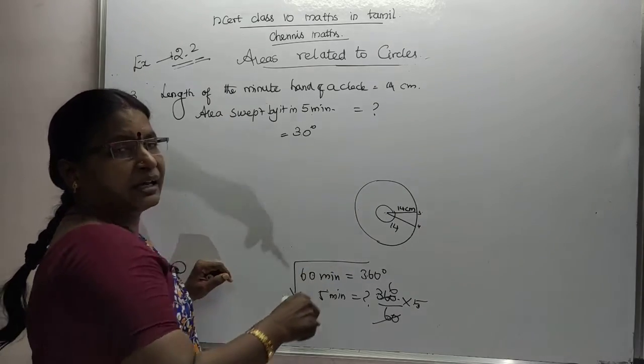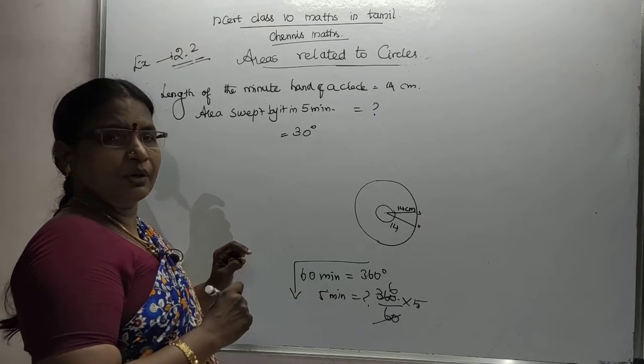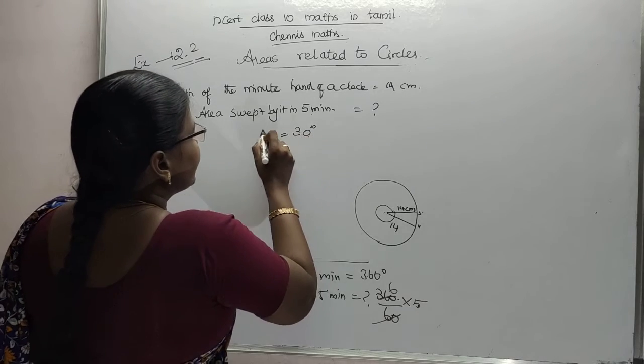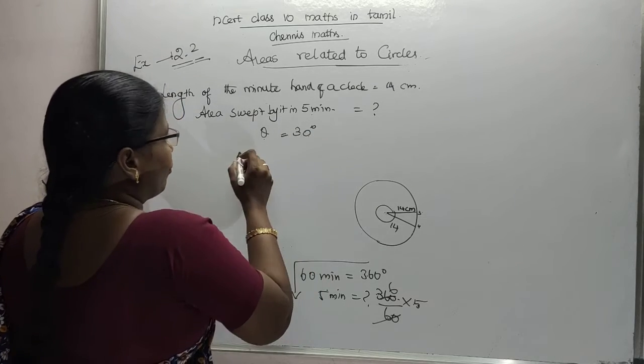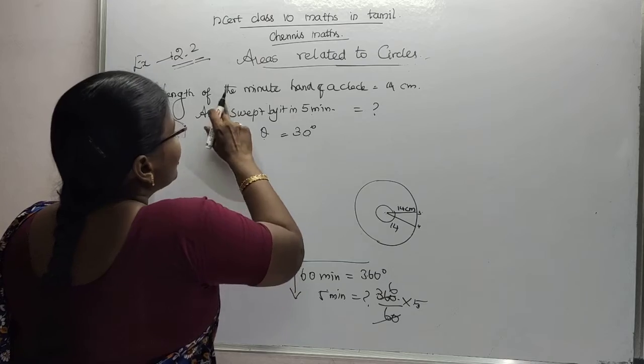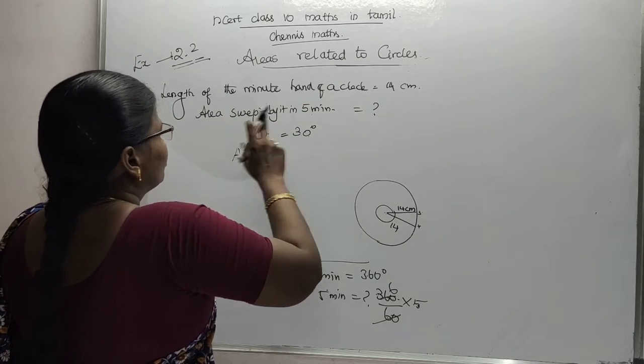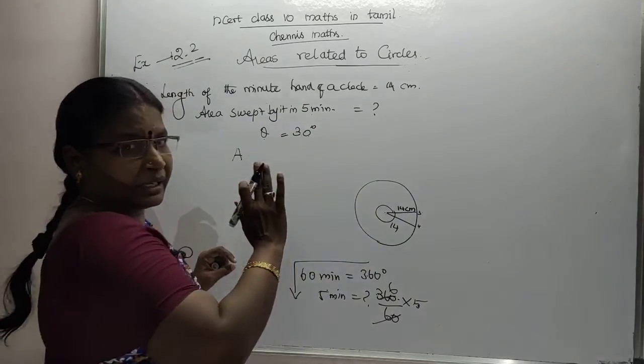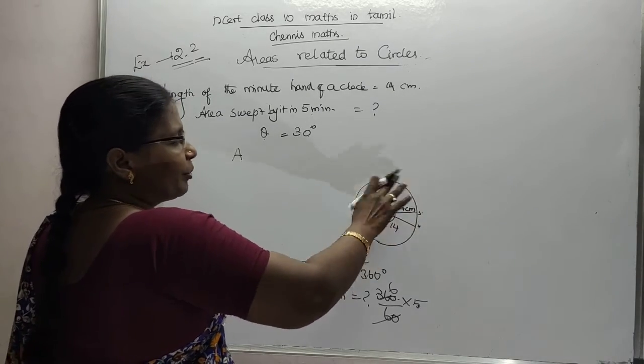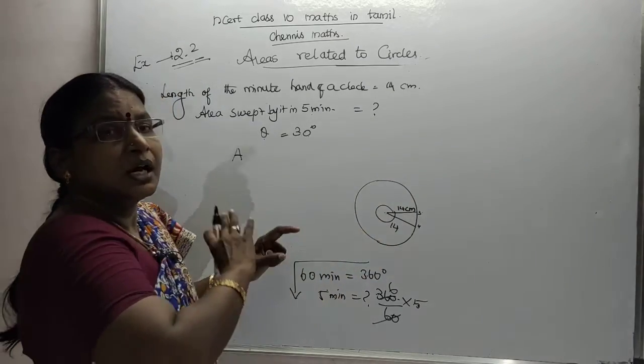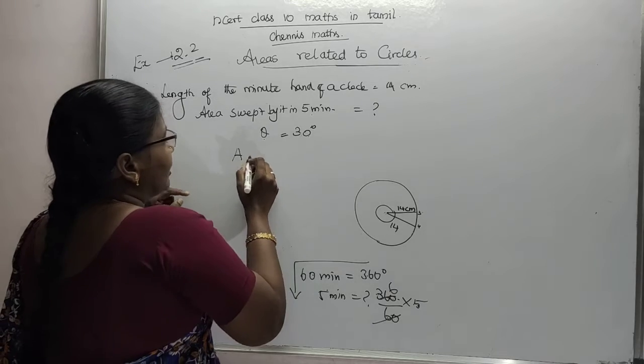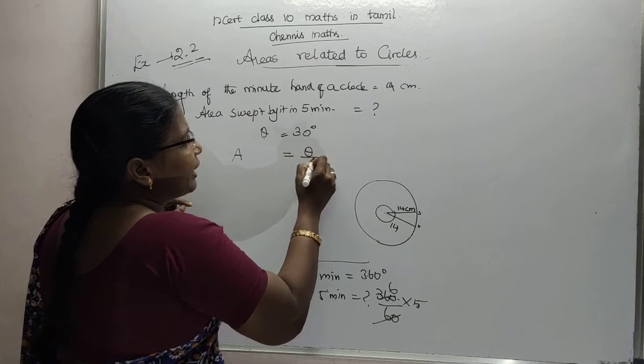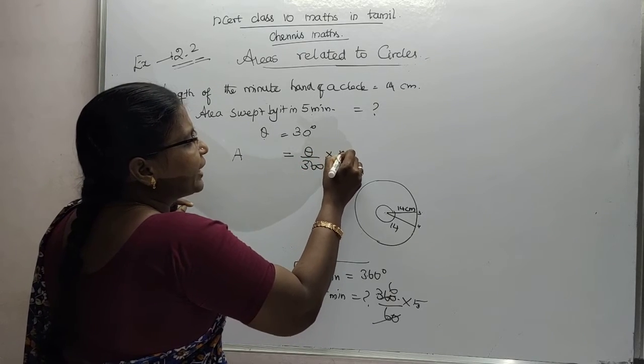Therefore, area. Length of the minute hand of a clock - how much part of the region is being rotated? Area is equal to theta by 360 into pi r square.